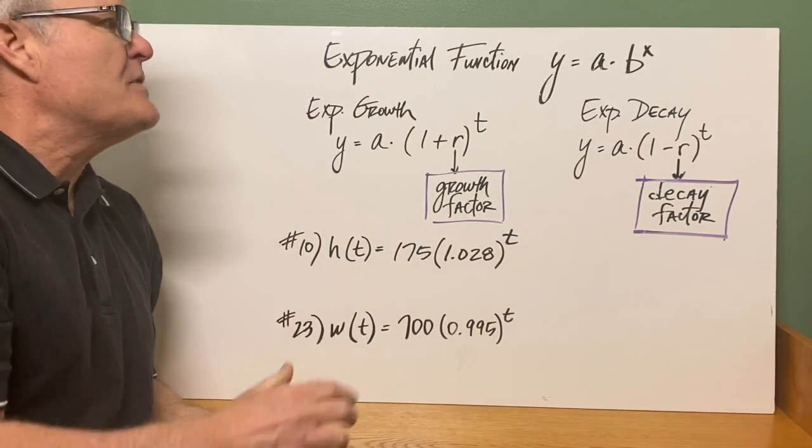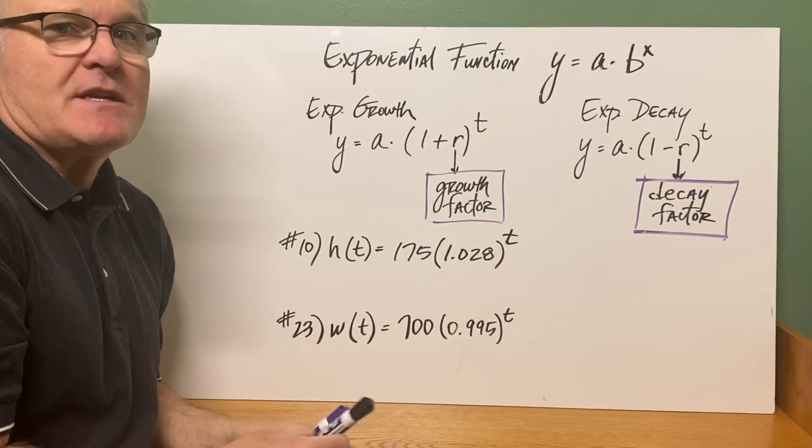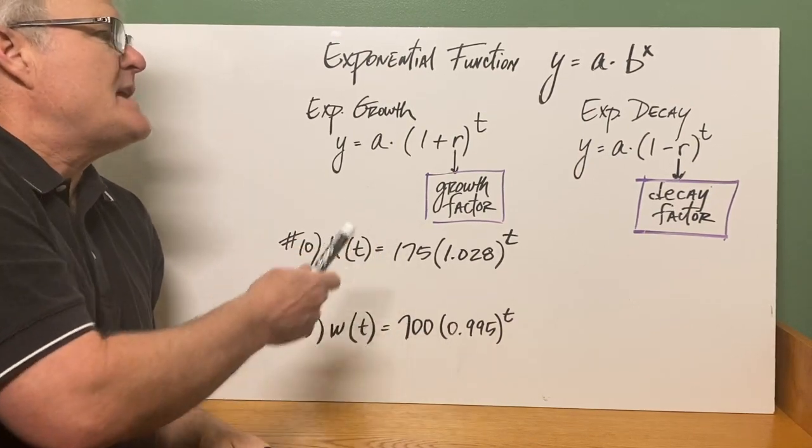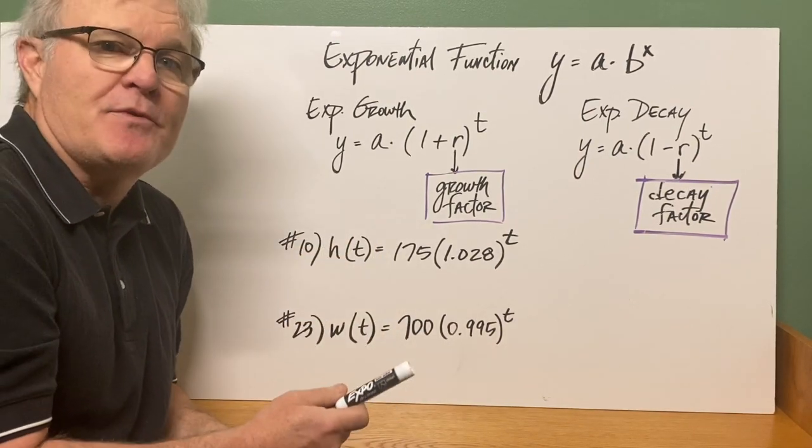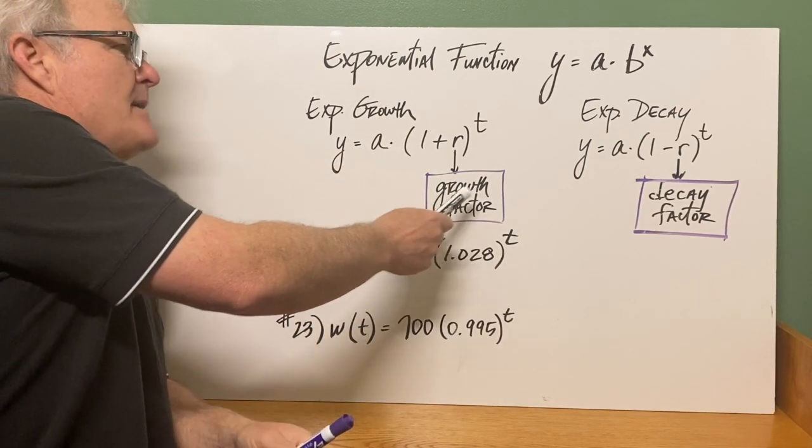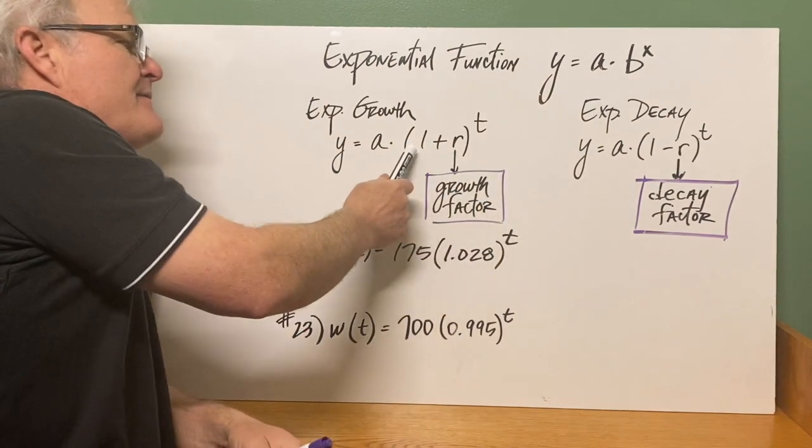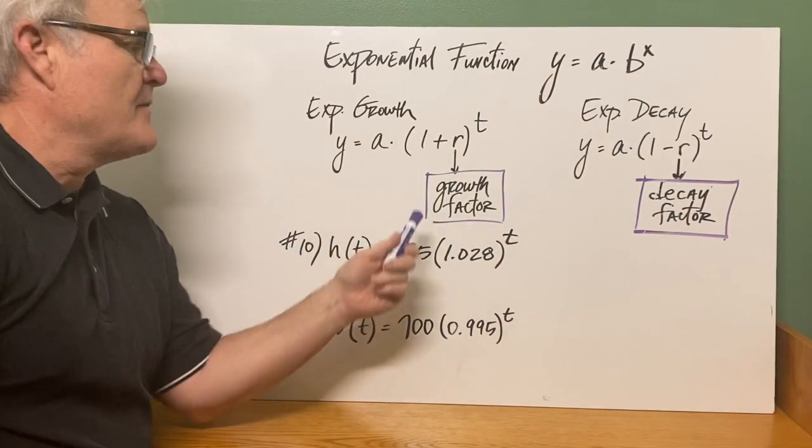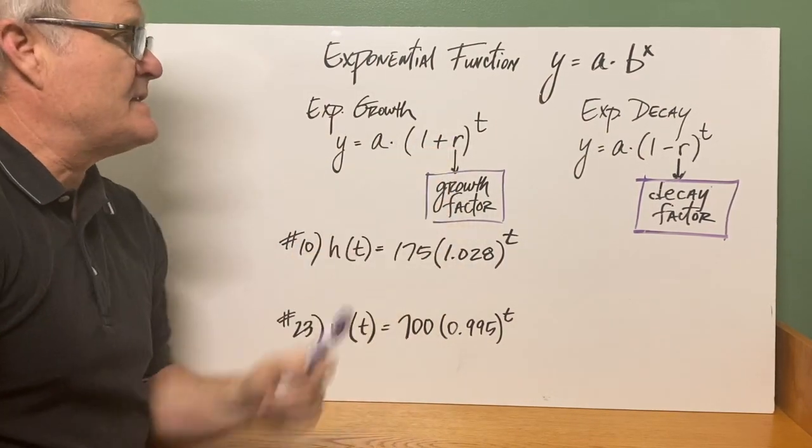So for exponential growth, you know something is exponential growth if its percentage is greater than 100%. So it's going to be y equals a times, now in place of b if it's growth is 1 plus the growth rate raised to the t power.